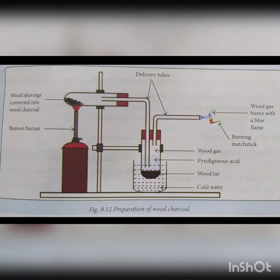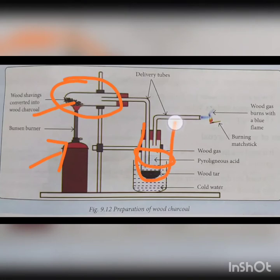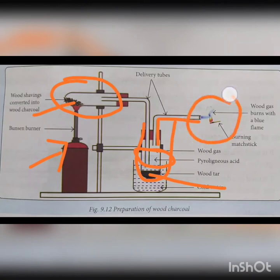We heat the first test tube containing the wood shavings strongly using the Bunsen burner. After some time, we will observe a clear liquid called pyroligneous acid collecting in the second test tube along with a black coloured sticky liquid mass called wood tar. We then bring a lighted matchstick near the open end of the second delivery tube. We will observe that the gas coming out burns with a blue flame, indicating the presence of wood gas. The black residue left behind in the first test tube is the wood charcoal.